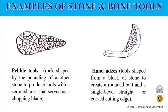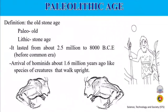The second tool is the hand adze, which is shaped from a block of stone to create a rounded butt and a single bevel straight or curved cutting edge. The Paleolithic age is defined as 'old stone age,' from the word paleo, meaning old, and lithic, meaning stone age.